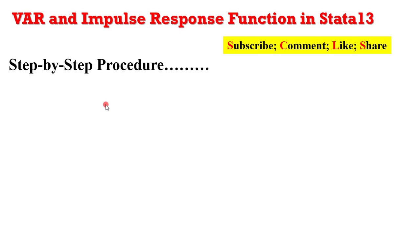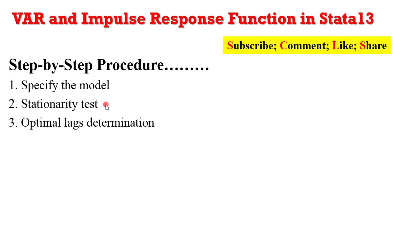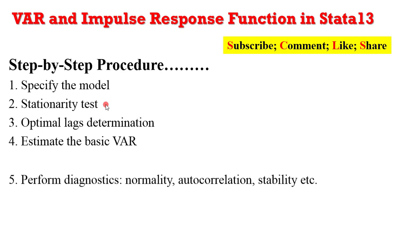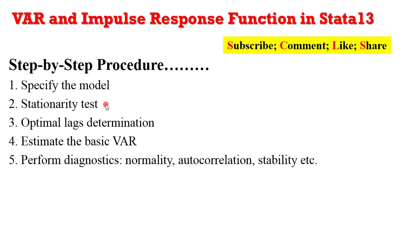So what is the step-by-step procedure in Stata? Number one, specify the model correctly. Second, perform stationarity tests. Third, determine optimal lags for the model. Then go ahead to estimate the basic VAR. After that, you have to perform some diagnostics to ensure that the model is stable, the errors are not serially correlated, and at best, the residuals are normally distributed. After that, perform impulse responses, then interpret your results.